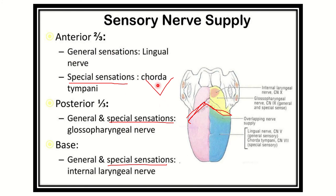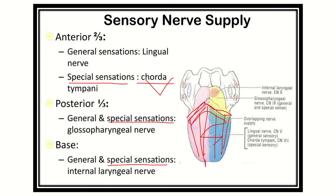The lingual nerve, which supplies general sensation to the anterior two-thirds, is a branch of the mandibular division of the trigeminal nerve. So for the anterior two-thirds — the largest part of the tongue — taste is carried by the chorda tympani of the facial nerve, and general sensation is carried by the lingual nerve, a branch of the mandibular nerve from the trigeminal nerve.